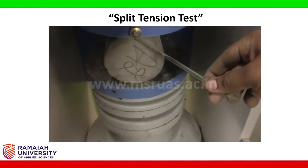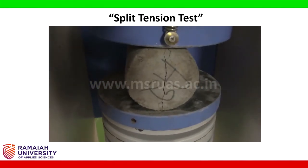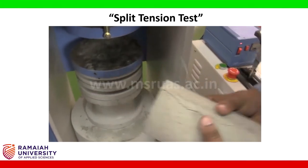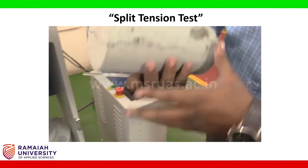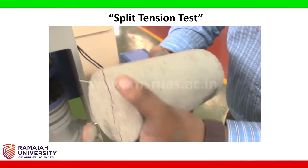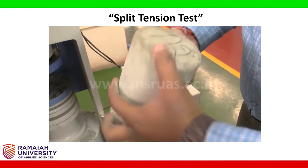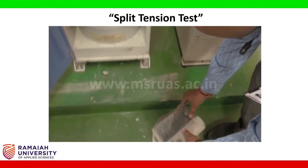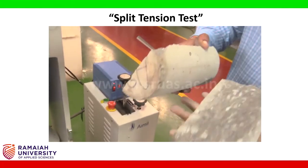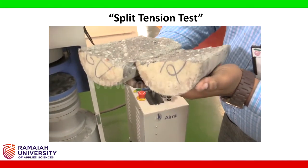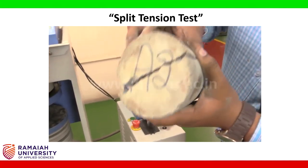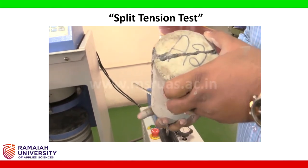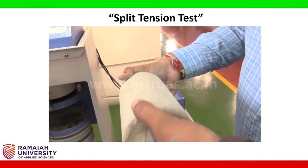The specimen is going to fail along the diametrical axis. Opening the specimen reveals the beauty of the failure — it fails exactly on the diametrical axis, splitting into two equal halves. This is what we call determining the split tensile strength of concrete. This completes the split tensile strength of concrete experiment.